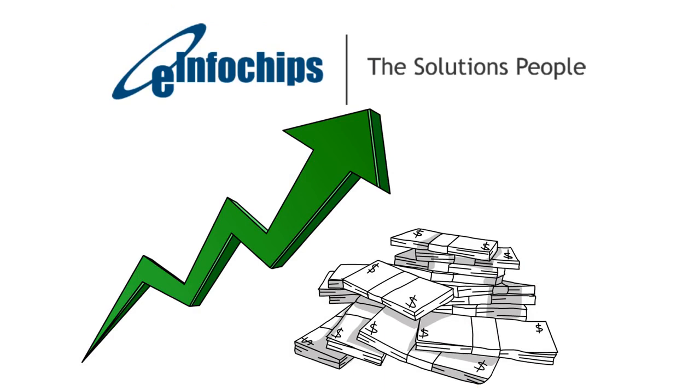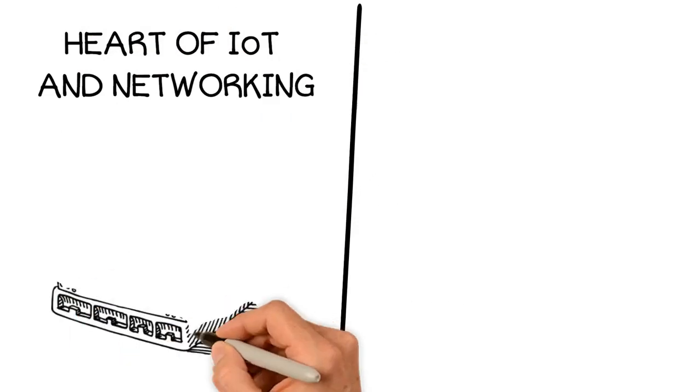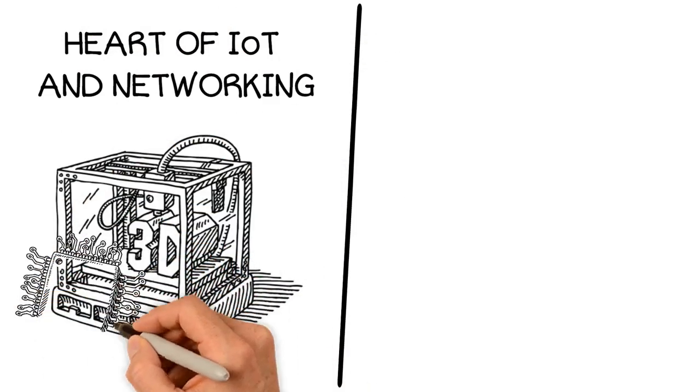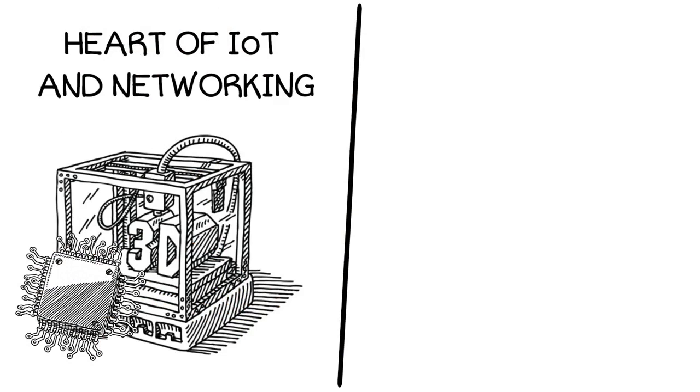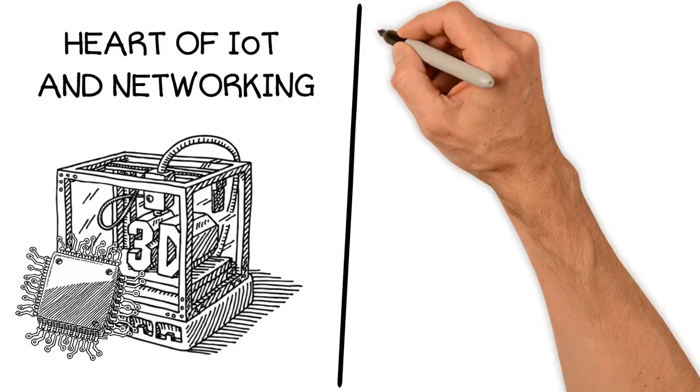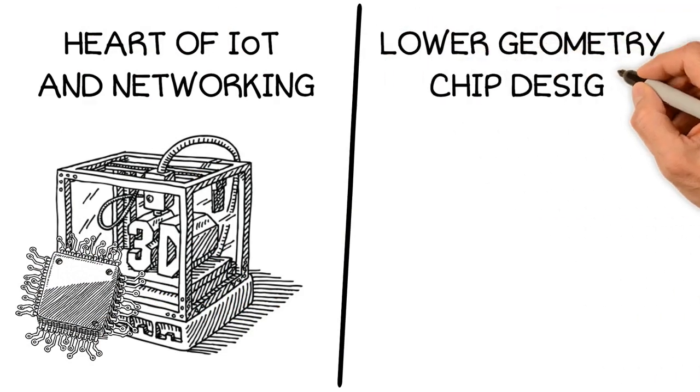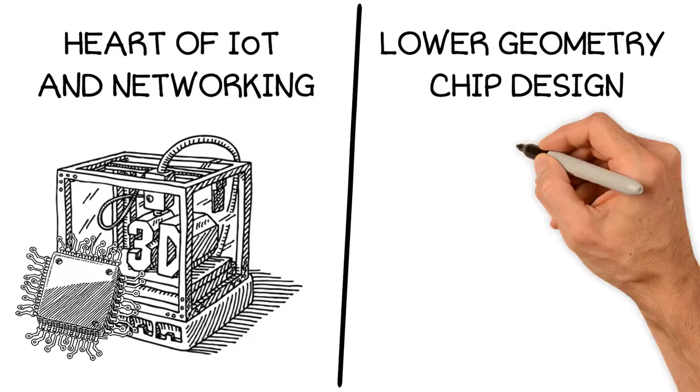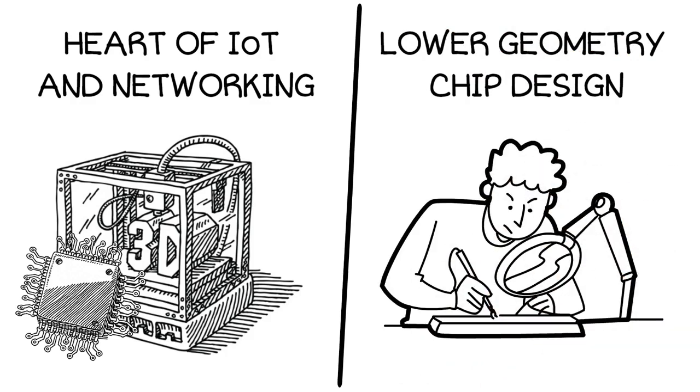In order to maximize revenue realization in networking business, semiconductor companies like e-infochips will help you with the heart of IoT in networking by giving low-power consumption chips, nanotechnology-based solutions, 3D printing, and many more, playing a crucial role in tackling lower-geometry chip design and its connectivity complexity, even with diminishing chip size.